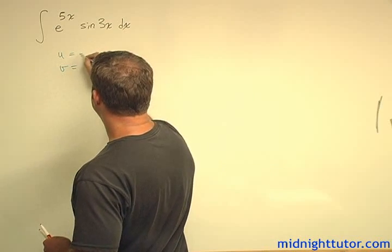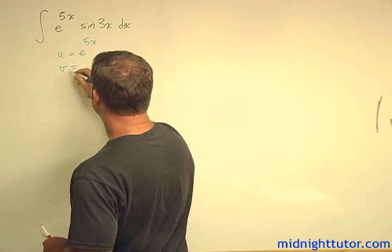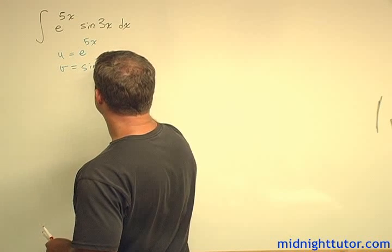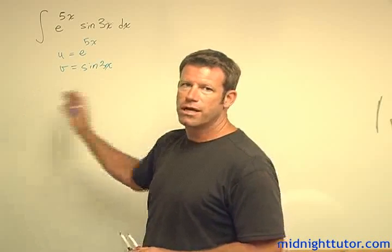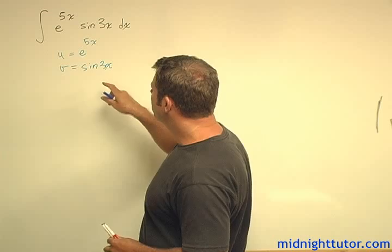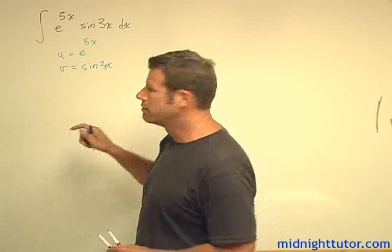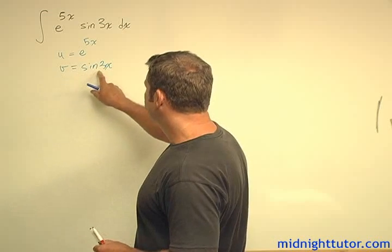So let's do u equals e to the 5x and the v sine 3x. Now the thing is when I do parts and I create the new integral, I want to have something that I can still integrate. So in this case...